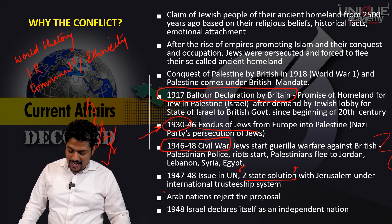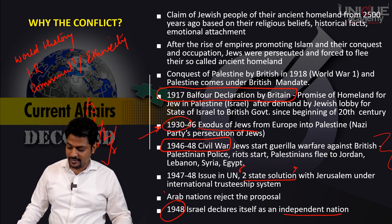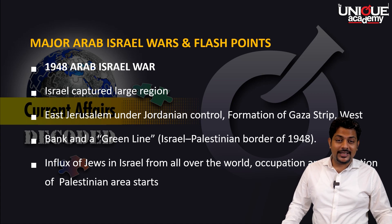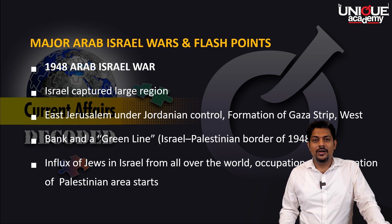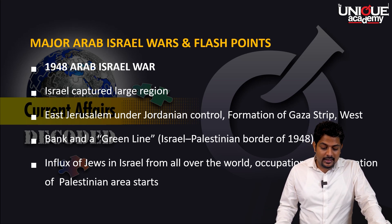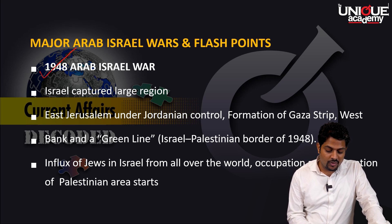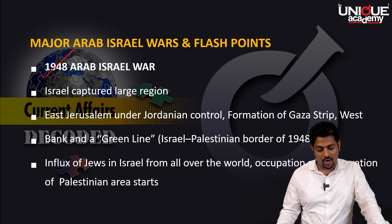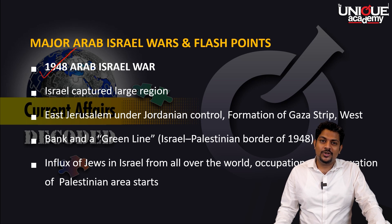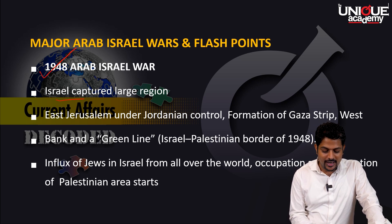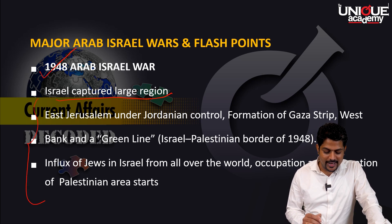This two-state solution was rejected by the Arab nations and Palestine, but Israel was happy with it and declared its own independence in 1948. This created a serious impact — the Palestinian people, backed by the Arab world, started feeling this was not right, and it resulted in the 1948 Arab-Israel War. But to the surprise of many, Israel came out as a stronger player and occupied larger regions in this particular area.